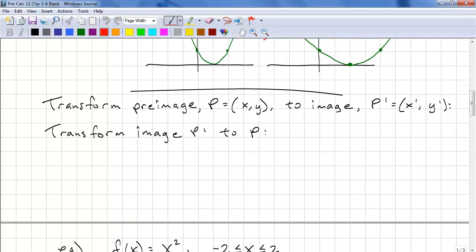To transform the pre-image to an image, we have x' = x/b + h, y' = ay + k. To go from the image to the pre-image, we need to go in reverse. So let's do the algebra. x' - h = x/b. So x = b(x' - h). And for y' - k = ay. So y = (y' - k)/a.